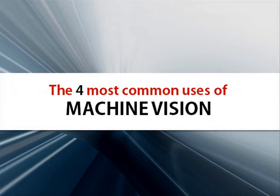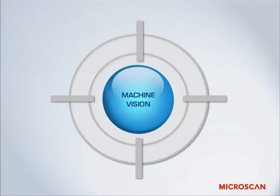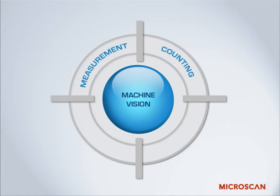Let's talk about some of the most common applications of machine vision. As it has developed, machine vision's applications have grown into four basic functions: measurement, counting, location, and decoding.